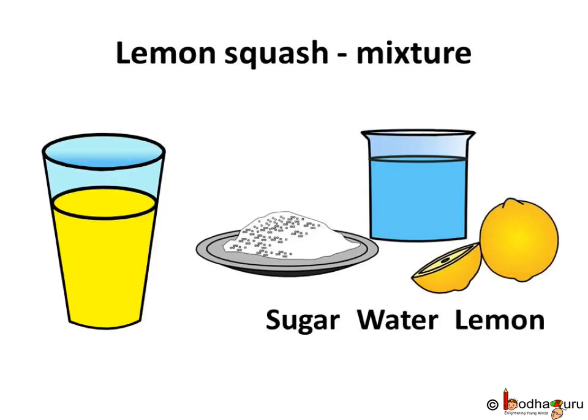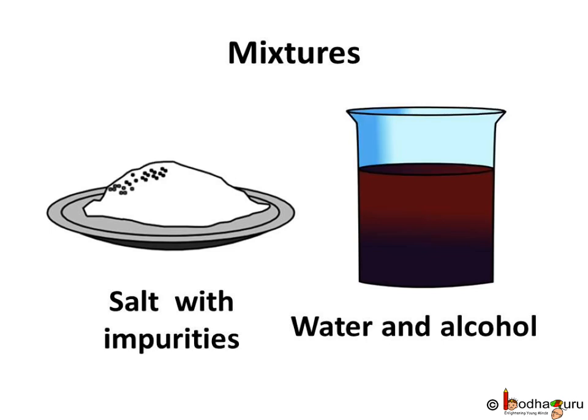We mix a few pure substances to make a mixture. Like, we added sugar, water, and lemon juice to make a drink. The lemon squash will reflect the properties of all the components present in it — the squash will have the sweetness of sugar, the sourness of lemon, and of course the coolness of water. The lemon squash was a desirable mixture which was created by us.